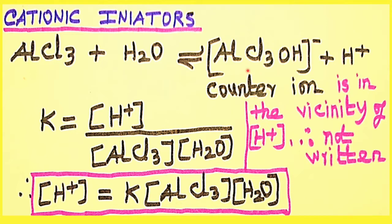The counter ion is in the vicinity of the H+ ion; therefore it is not taken into consideration — that is, it is not written. The equilibrium constant for this process is K = [H+][AlCl3⁻] / [AlCl3][H2O]. Therefore, the concentration of cationic species (H+ ion) produced is calculated from this equilibrium constant.